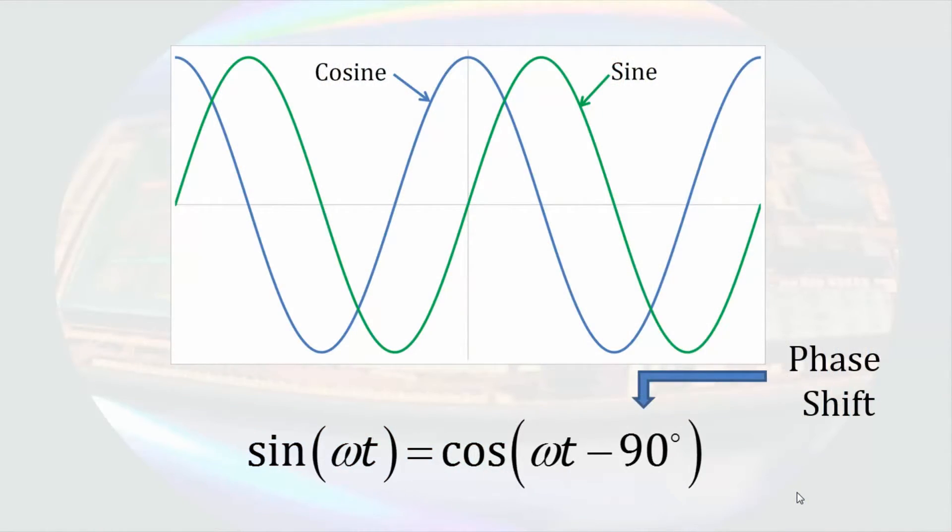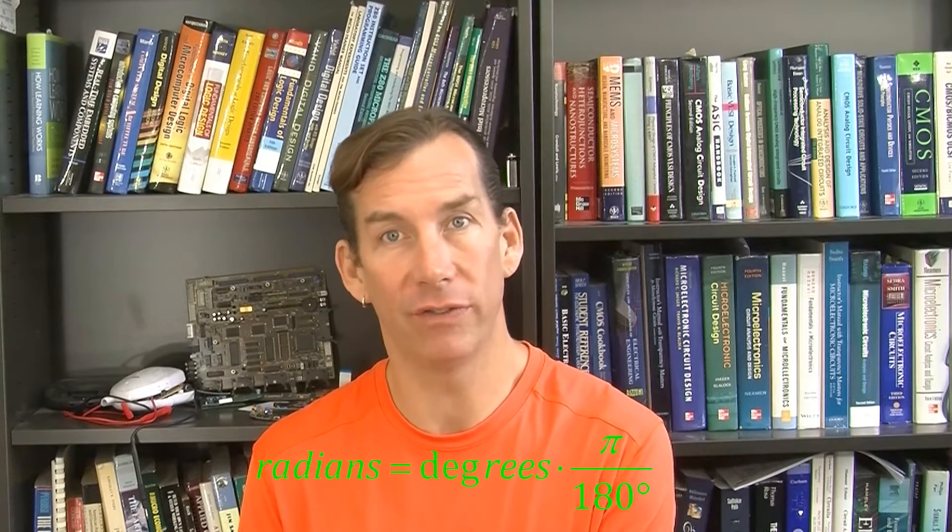The angular frequency times time portion of the argument has units of radians, so the phase angle has to be stated in radians in order to calculate a value for the function. However, radians are not the most intuitive units for angles. If someone tells me an angle is 0.4 radians, it's not immediately obvious, but if they say 23 degrees I'd have a good sense of the size. Angular frequency is better described in radians per second, so we keep that unit, but phase angles are usually written in degrees. This is mixed notation, mathematically improper, so great care must be taken. If an instantaneous value is needed, we must convert the phase angle to radians.